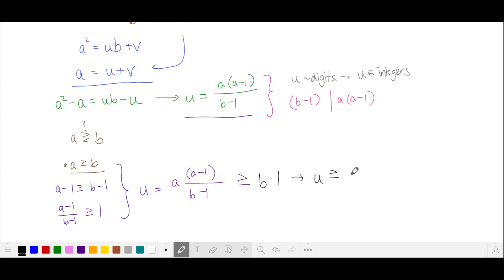So here we have u is greater than or equal to b. This is our contradiction because again, u is a digit in base b, so the maximum value of u is b minus 1.